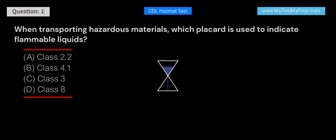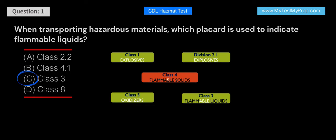Answer: C. Class 3 placards are used to indicate flammable liquids. Class 2.2 indicates non-flammable gases, Class 4.1 indicates flammable solids, and Class 8 indicates corrosive materials.